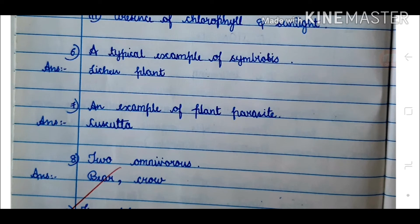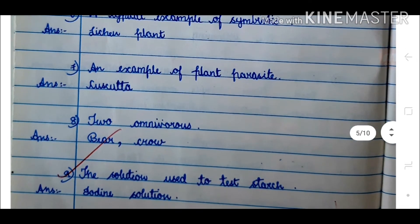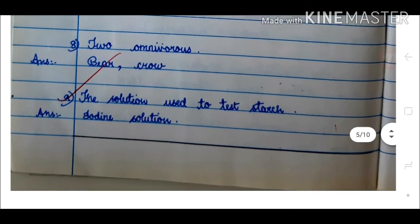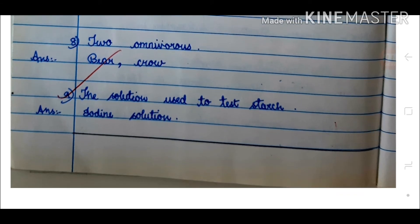6. A typical example of symbiosis — answer: lichen plant. 7. An example of a plant parasite — answer: Cuscuta. 8. Two omnivores — answer: bear and crow. 9. The solution used to test starch. 10. Answer: iodine solution.